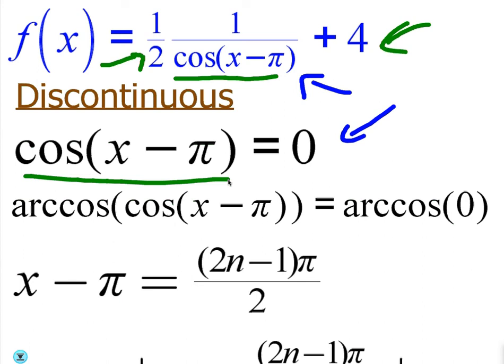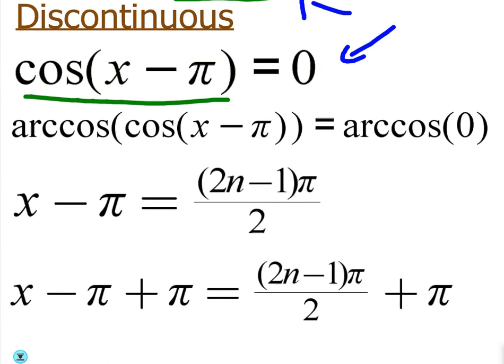Just like we did with rational functions. Because it basically is a type of rational function. Now the next thing we're going to do is take the inverse cosine of both sides, or as some people call it, the arc cosine. It's the same thing. That cancels the cosine on both sides. We're left with x minus pi. What is arc cosine of zero? It's wherever cosine equals zero in the unit circle, which is where x equals zero.